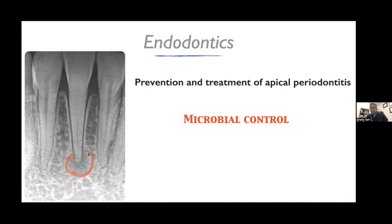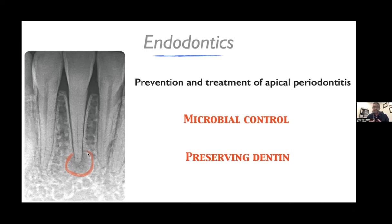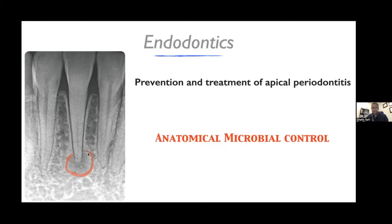Our endodontic disease is called apical periodontitis — the radiolucent areas we see on x-rays around the root apices. In order to prevent and treat apical periodontitis, we need to exert microbial control inside the root canal system. We need to do this carefully in order to preserve dentin and save the tooth so it remains functional, because microbial control could also simply mean extracting the tooth. So we need to remove the microbes that are the source of disease while conserving dentin — this is what we call anatomical microbial control, the title of our course today.